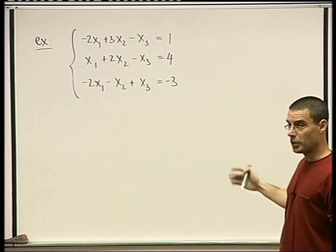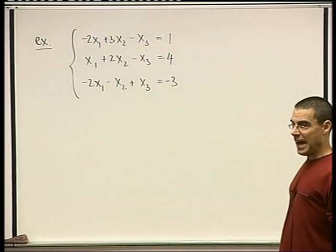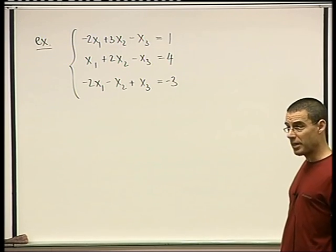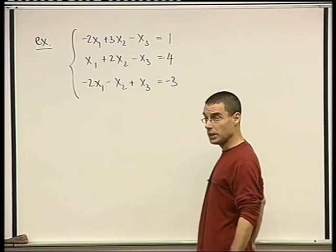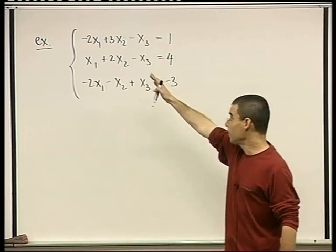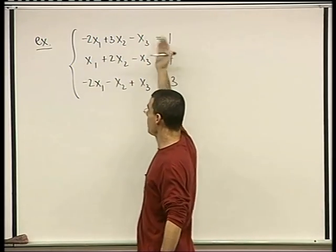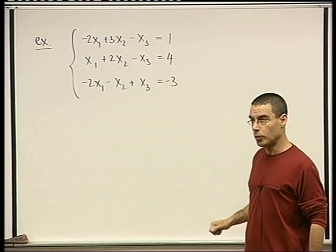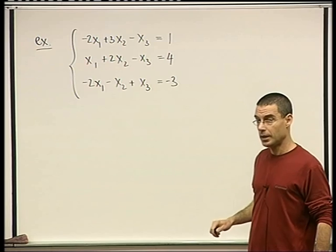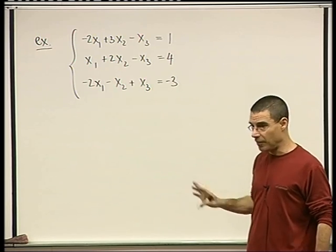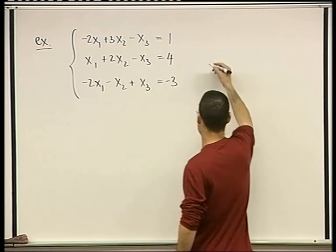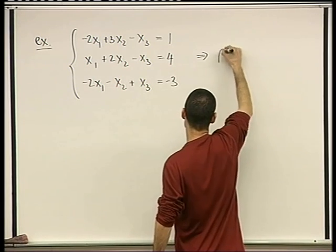This is an easy system. You can, in fact, solve it by your very good old high school methods of substituting, solving the first equation for x3, for example, substituting into the other two and a couple more rows and you're done. So this is what we're going to do is obviously not the shortest way of solving this. But nevertheless.